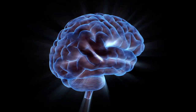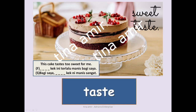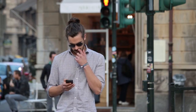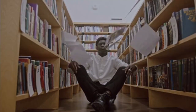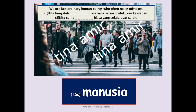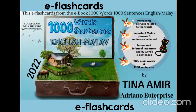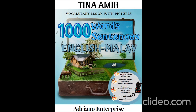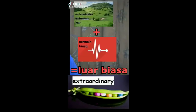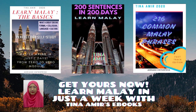The human brain processes images faster than words. Interesting pictures and useful sentences related to words will help you retain knowledge faster. E-flash cards make learning available anywhere and at any time. Imagine memorizing 1,000 words on 1,000 paper cards — instead, you can learn through e-flash cards viewable on mobile phones, tablets, or laptops. 1,000 words, 1,000 sentences, e-flash cards and e-book are out now. Tina Amir's Learn Malay e-books — master Malay language in just a week. Grab yours today.